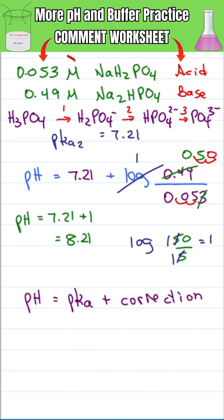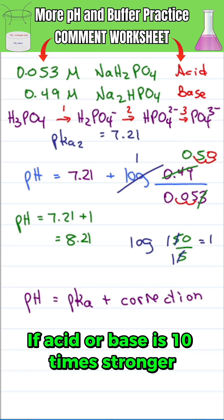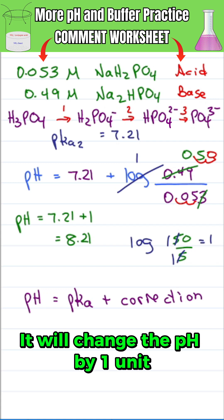Meaning if the acid or base is 10 times stronger, it will change the pH by 1 unit in either direction.